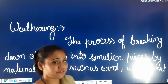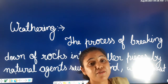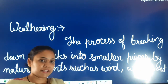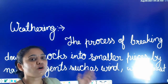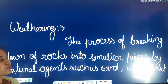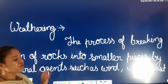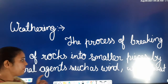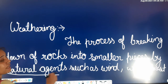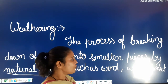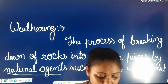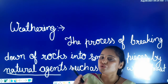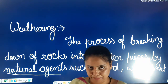Next is weathering. It is a very important term. What is weathering? Weathering is the process of breaking down of rocks into smaller pieces by a natural agent, such as wind, water, frost, and roots of plants, etc.